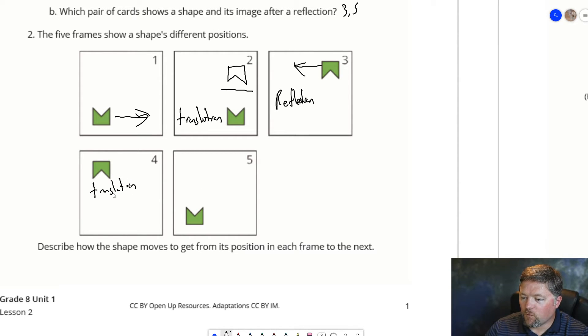And then 4 to 5 looks like another flip. Draw it in this box because it was up here, and they reflected it down to there.